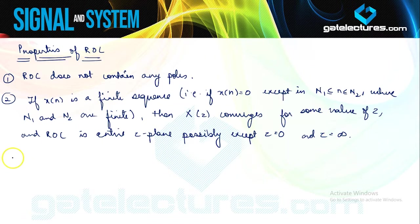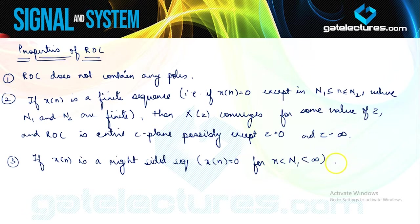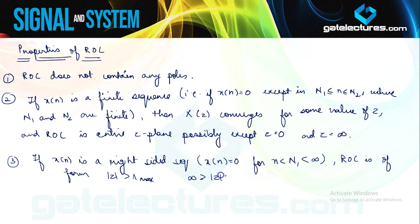If the signal is a two-sided or infinite signal, then the ROC is going to be a strip — same properties follow here. Similarly, if x(n) is a right-sided sequence — meaning x(n) equals 0 for n less than n1 for some finite n1 — then X(Z) converges for some value of Z, and the ROC is of the form |Z| greater than R_max, where R_max is the largest magnitude of any pole of X(Z). The ROC is the exterior of the circle |Z| equals R_max in the Z-plane, with the possible exception of Z equals infinity.